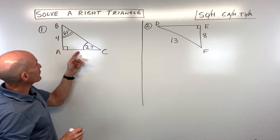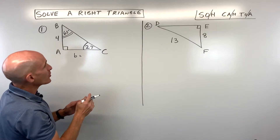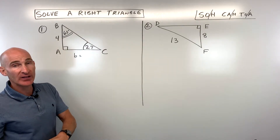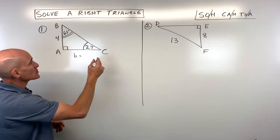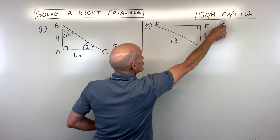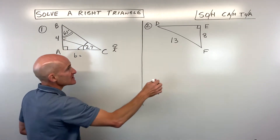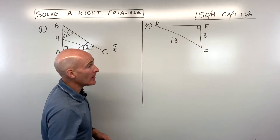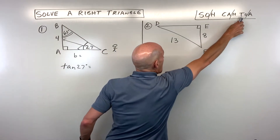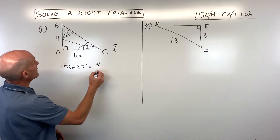Now let's solve for the missing side — side B, which is across from angle B. I like to start with the initial given quantities because they're exact and not rounded, so you don't carry any rounding errors forward. Positioning at the 27-degree angle, we ask: what trig function ties together the opposite side and the adjacent side? Opposite over adjacent is tangent — TOA. So tangent of 27 degrees equals the opposite divided by the adjacent, which is 4 over D.